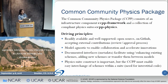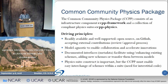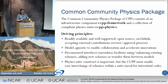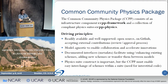This is called the Common Community Physics Package, CCPP, and it consists of two different components: the CCPP framework and a collection of compliant physics suites called CCPP Physics. The driving principles are that the system has to be readily available and well supported — it's open source, it's on GitHub, and it's accepting external contributions through a standardized review and approval process. It's also supposed to be model agnostic. The key behind this is that we have documented interfaces, which we also refer to as metadata, that facilitate using and enhancing existing schemes, adding new schemes, or transferring them between models.